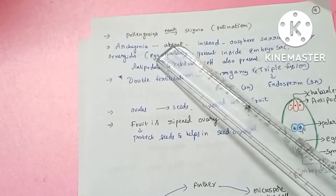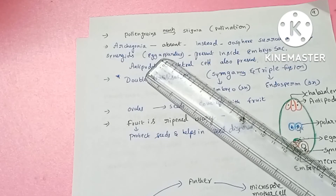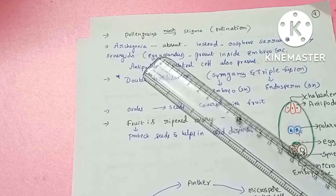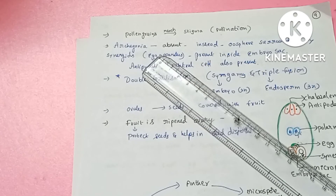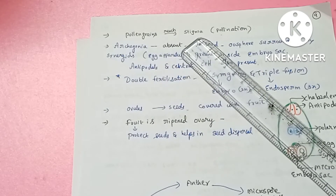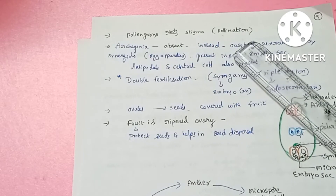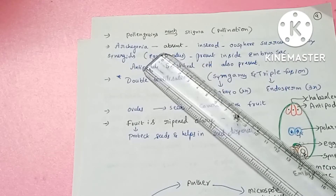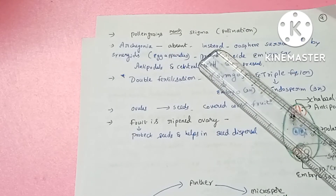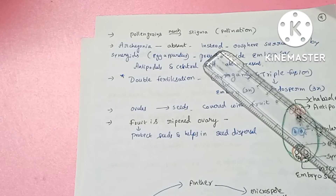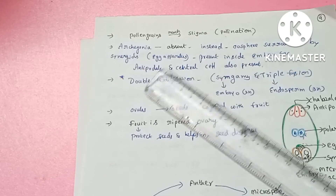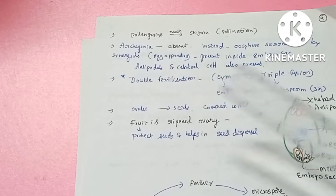Pollen grains produce male gametes. Different agents like air, water, and animals carry pollen grains to the stigma through the process of pollination. Pollination means the transfer of pollen grains from the anther to the stigma of the same flower or a different flower of the same plant or another plant.